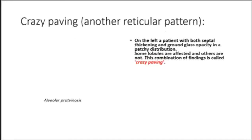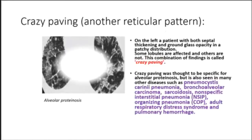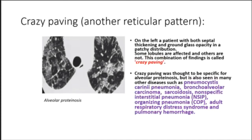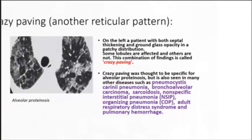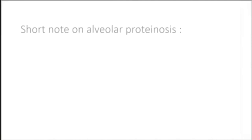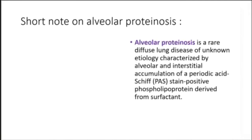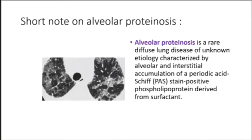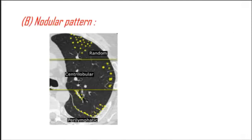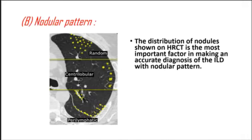Crazy paving was initially thought to be specific for alveolar proteinosis, but is also seen in many other diseases such as Pneumocystis carinii pneumonia, bronchoalveolar carcinoma, sarcoidosis, non-specific interstitial pneumonia (NSIP), organizing pneumonia (COP), adult respiratory distress syndrome, and pulmonary hemorrhage. Alveolar proteinosis is a rare diffuse lung disease of unknown etiology, characterized by alveolar and interstitial accumulation of a PAS-positive phospholipid protein derived from surfactant.